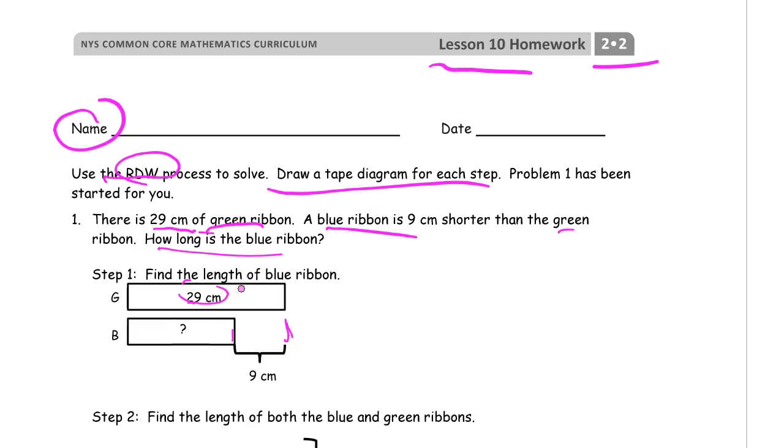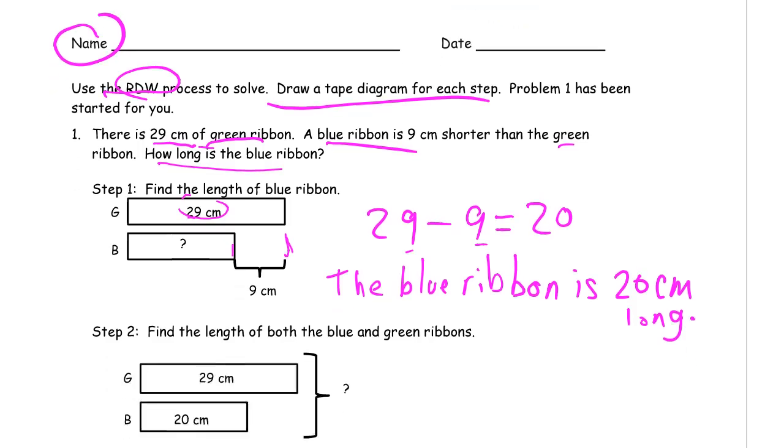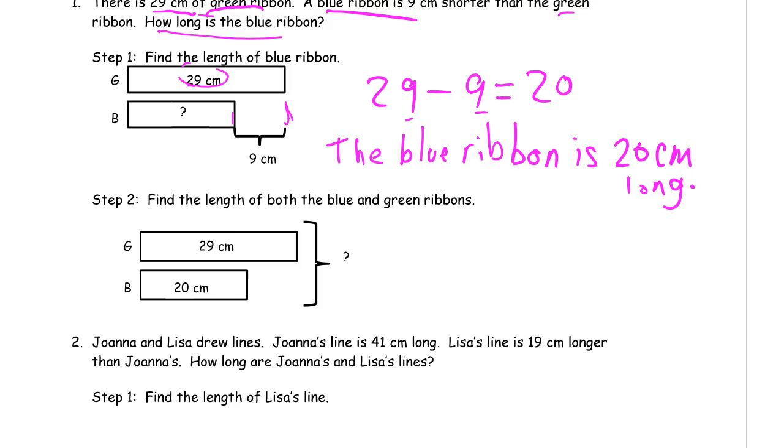Find the length of the blue ribbon. It's the difference between 29 and 9, right? So we've read it, it's drawn for us already, so we're going to write the equation: 29 minus 9 equals what. You're taking away the 9 ones, you're just going to have the 20 left. The blue ribbon is 20 centimeters long.